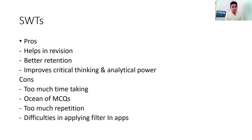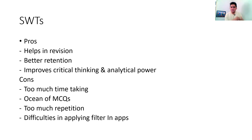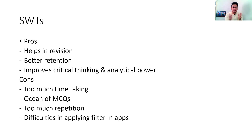But what are the cons? Subject-wise tests are too time-consuming. For subjects like medicine and surgery, there is no limit to the number of MCQs — it is like an ocean. There is also too much repetition; similar topics and similar questions repeat again and again, which wastes your time. Some apps may also have difficulty applying filters when you want to be selective. My advice: go for selective subjects — if you find physiology or a particular topic like rheumatology difficult, solve MCQs for that. Be very selective with subject-wise tests instead of solving from one to a thousand.